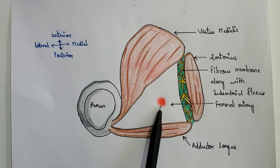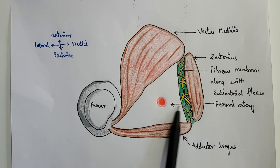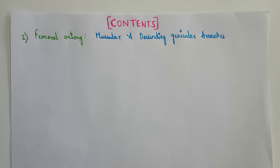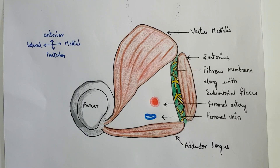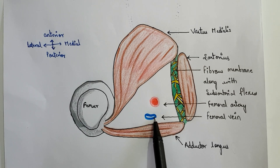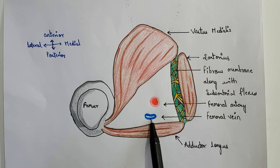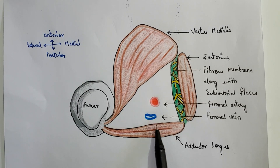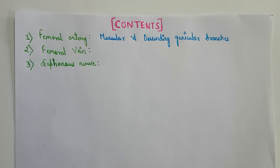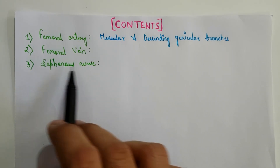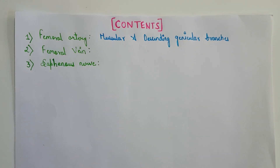In the central region of the adductor canal we have the femoral artery. The second content is the femoral vein, which is present posterior to the femoral artery.